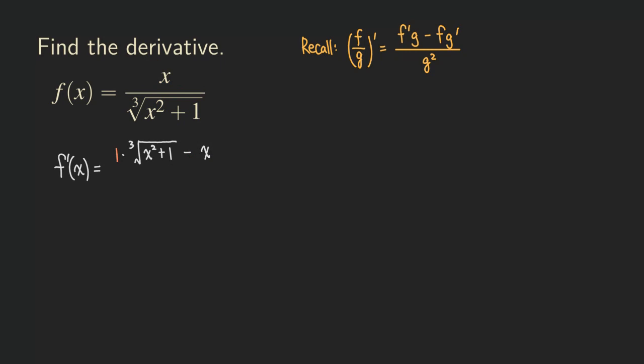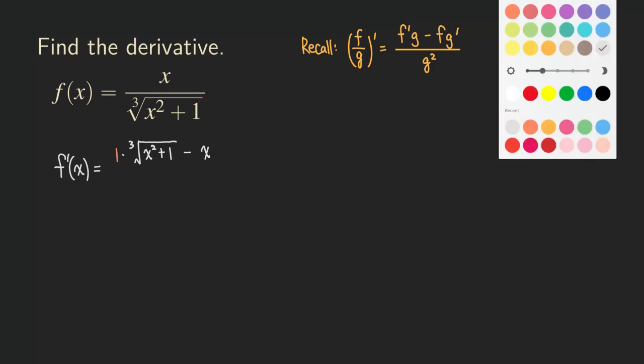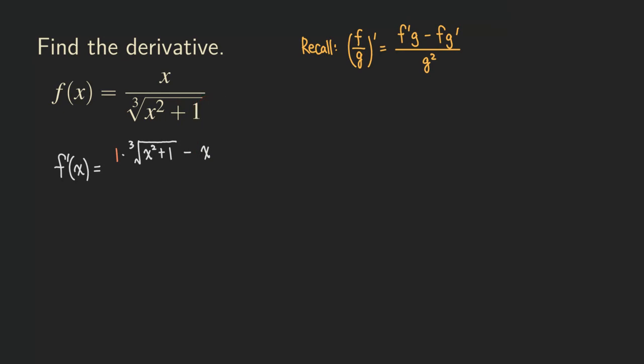Then, following the formula from the quotient rule, we have minus, and then f — which is just copying the top function — so we are getting x. And then the g prime is the one that we need to differentiate the bottom function.